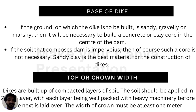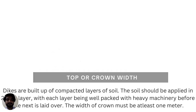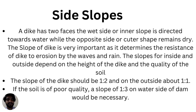The second component is the top or crown width. Dikes are built with compacted layers of soil to hold the water table. The soil should be applied in 20-centimeter layers, with each layer being well packed with heavy machinery before the next is laid over, so that the layers can hold the water table to a certain level. The width of the crown must be at least one meter.